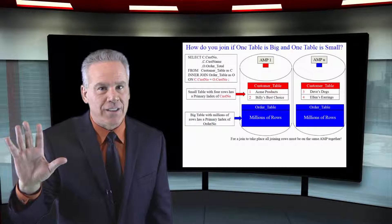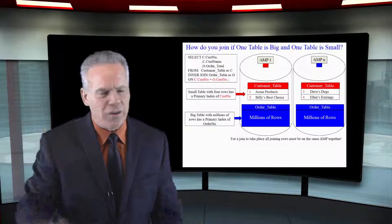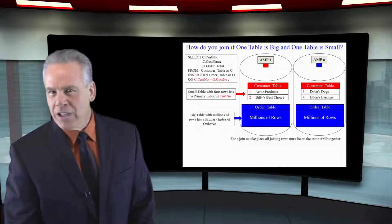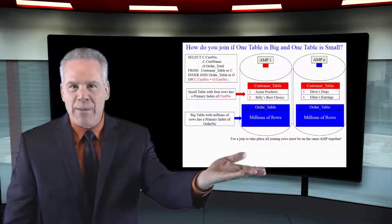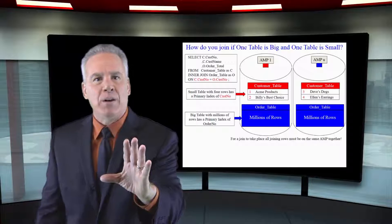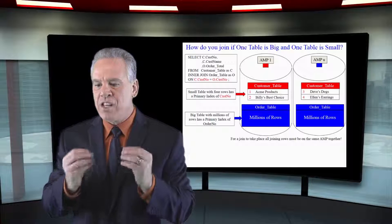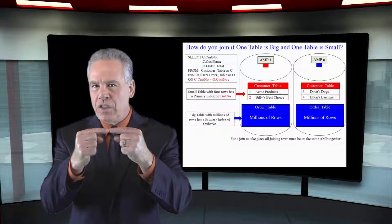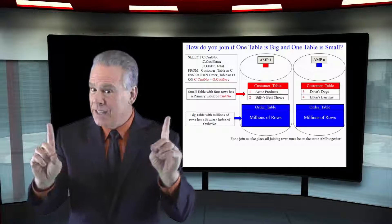I've looked at the statistics that you collected. I know that this customer table only has four rows and this order table has millions. I've got a better plan than that. We have to get the rows on the same amp. Isn't that correct? Yes, it is.